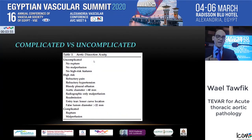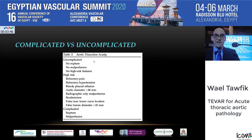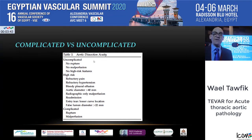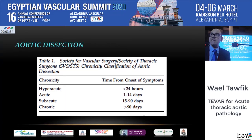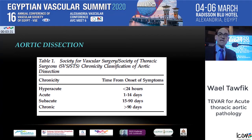The guidelines also provide recommendations for what is considered complicated versus uncomplicated. Uncomplicated is defined as no rupture, no malperfusion, and no high-risk features. If the patient has any high-risk features — such as readmission, an entry tear on the lesser curve, or refractory pain — that is considered complicated and must be taken into account when managing these patients.